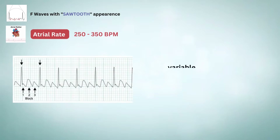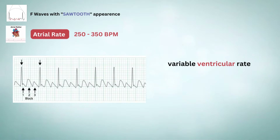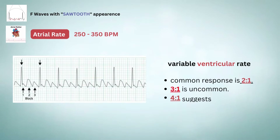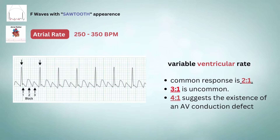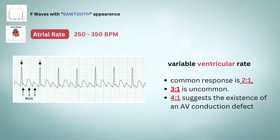Next, there is a variable ventricular rate depending on the AV conduction. The most common response is 2-to-1, whereas 3-to-1 is uncommon. A 4-to-1 response suggests the existence of an AV conduction defect and may be associated with complete AV block, in which case the RR intervals are regular and the F waves have no constant relationship to the QRS.